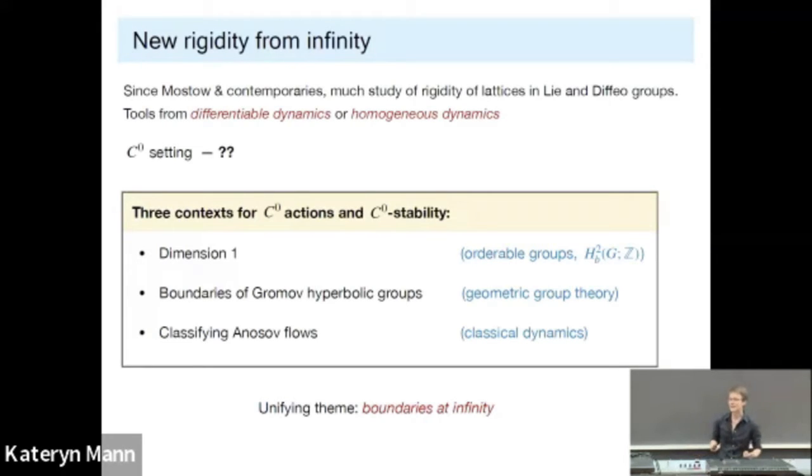So, since Mostow in his time, the area has not died, it has given birth to a rich study of rigidity of lattices, typically into Lie groups, or groups of diffeomorphisms of manifolds, using all kinds of tools from smooth dynamics, or homogeneous dynamics, some ergodic theory. But in the purely topological setting, there's more of a poverty of results and techniques. And what I'm going to talk to you about today is this much less explored area of continuous actions and C0 stability, in three different contexts, where boundary maps will appear.